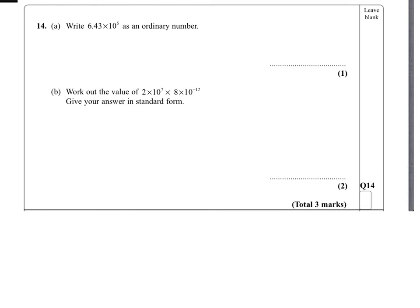So if we're going to write 6.43 times 10 to the 5 as an ordinary number, we'll write the 6, 4 and 3 to start with, and then we have to know how many other zeros there will be. There will be three more zeros, because when the power is 5, there's always one more number after the decimal point. So the answer is 643,000.